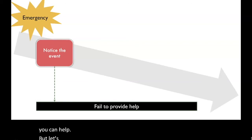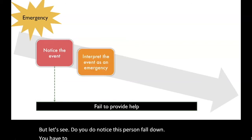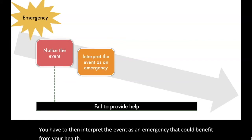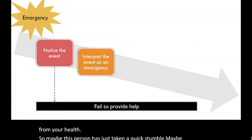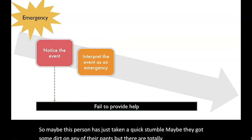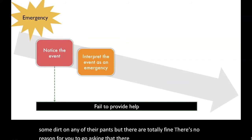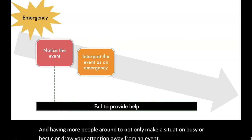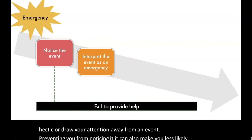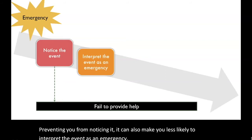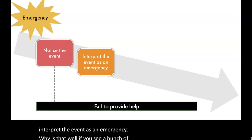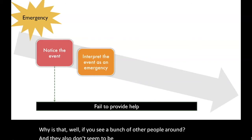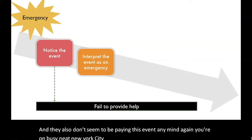But let's say you do notice. You have to then interpret the event as an emergency that could benefit from your help. Maybe this person just took a quick stumble, got some dirt on the knee of their pants, but they're totally fine and there's no reason to check on them. Having more people around can not only make a situation busy or hectic and draw your attention away from an event, preventing you from noticing it, but it can also make you less likely to interpret the event as an emergency.